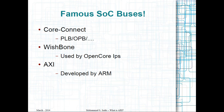Then we have Wishbone, which is mostly used by open-source IP cores kept in the OpenCores repository. For example, if you download an OpenRISC CPU from opencores.org, you can see that it talks Wishbone. Finally, ARM has developed a set of system-on-chip buses, extended and enhanced over time, and AXI is one of them. Our purpose here is to simplify things, so we are not going into the depths of what underlies AXI — we don't need to know that. Basically, AXI is one of these buses.